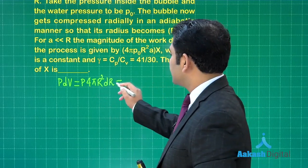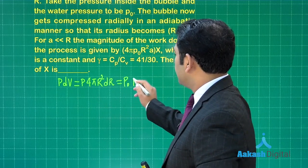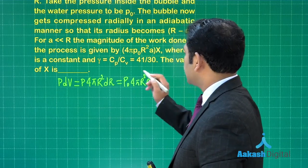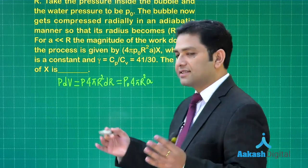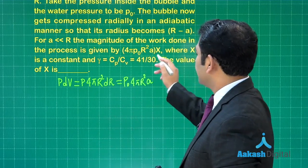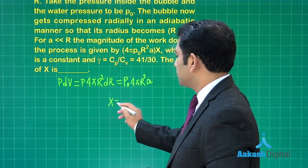Now you could see the original pressure is p0 into 4πr², the decrease in radius is equal to a, and that is the work done. If you compare with this particular thing, the value of x comes out to be 1. So 1 would be the correct integer for this.